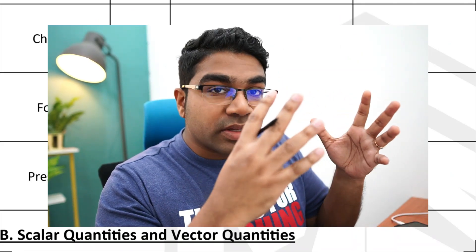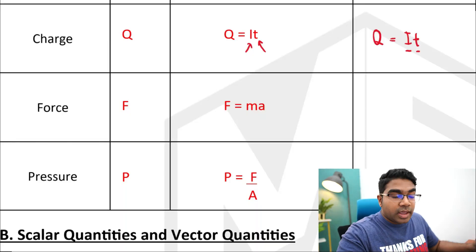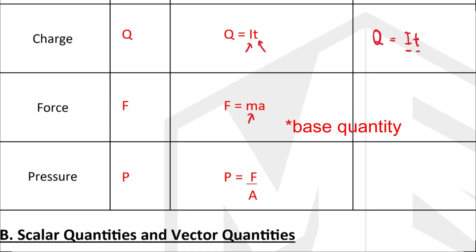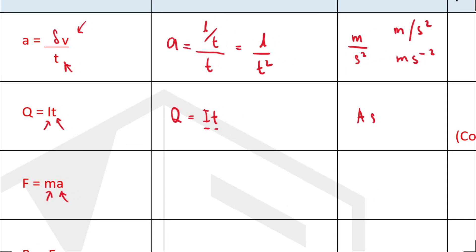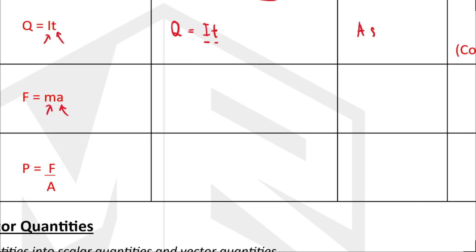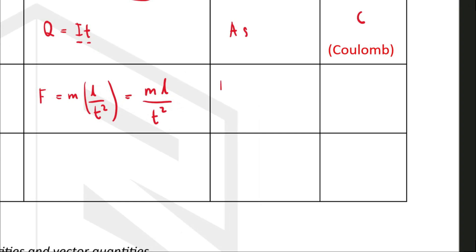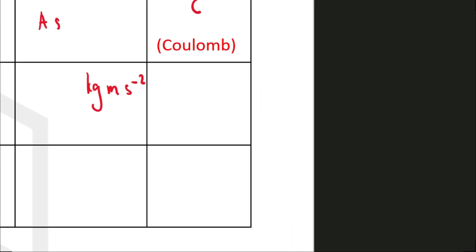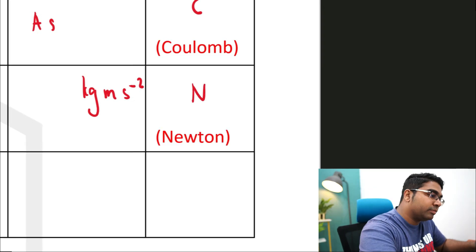Let's look at force. Force equals ma. Mass is already a base quantity but acceleration is not. Acceleration is L over T², so force in base quantities becomes mass times length over time squared — M·L over T². The SI base units are therefore kilograms meter per second squared (kg·m/s²). The special unit for force is the newton, capital N.